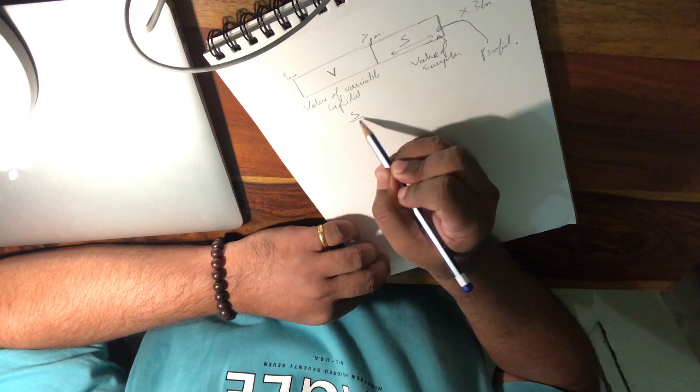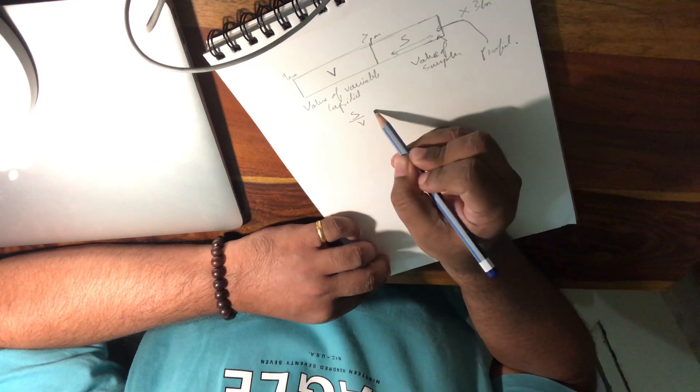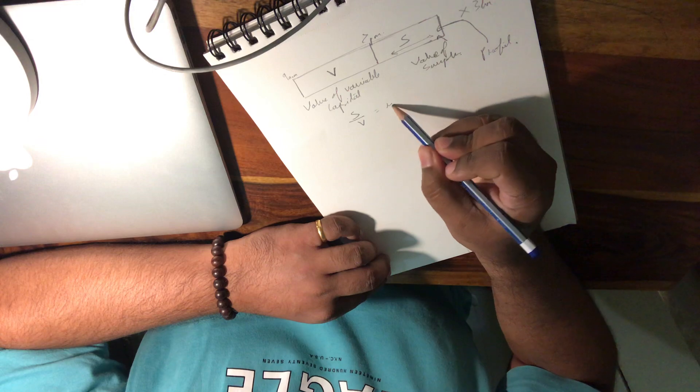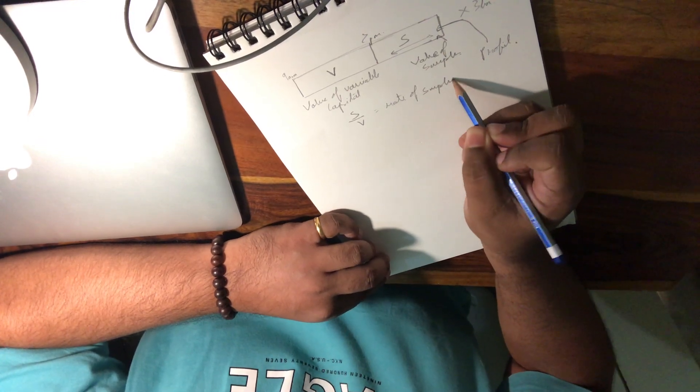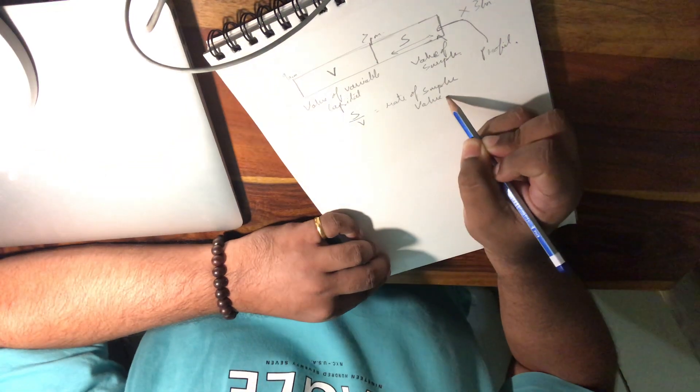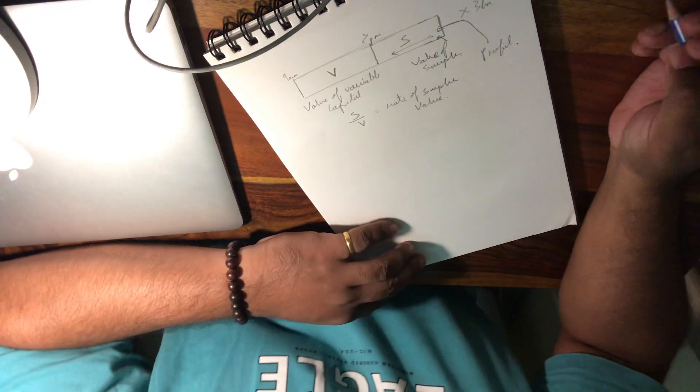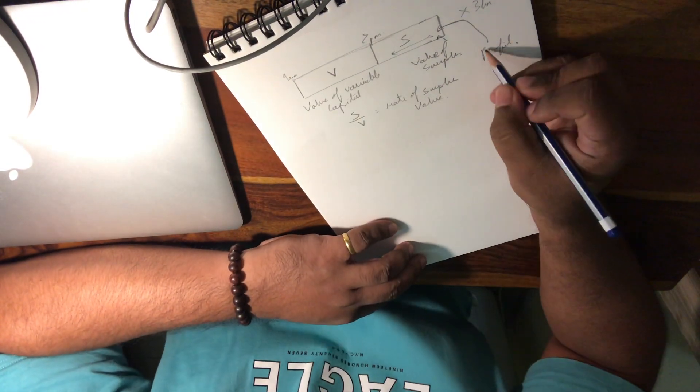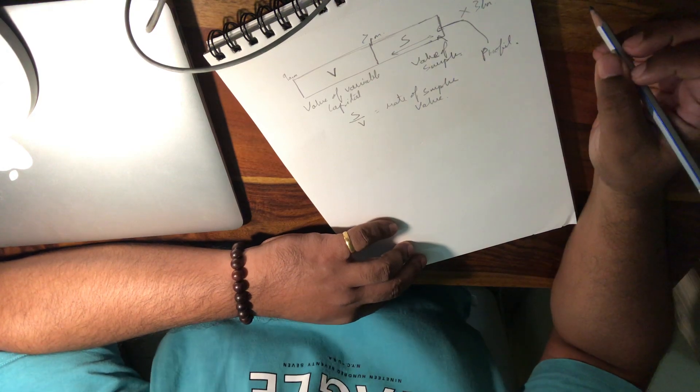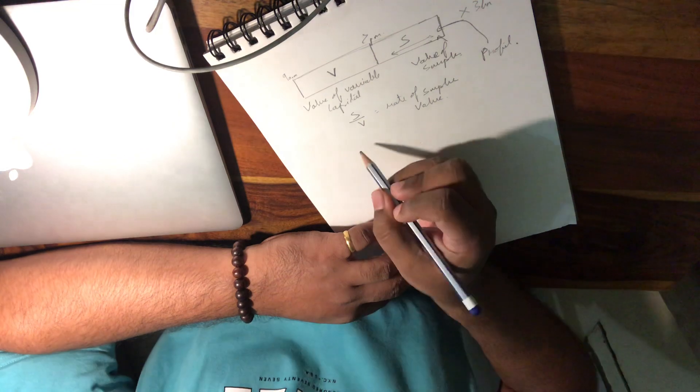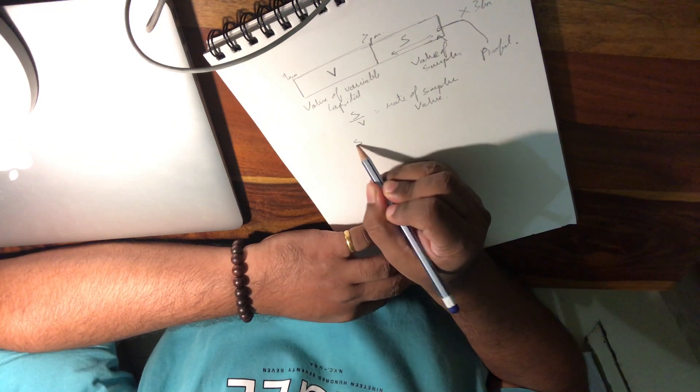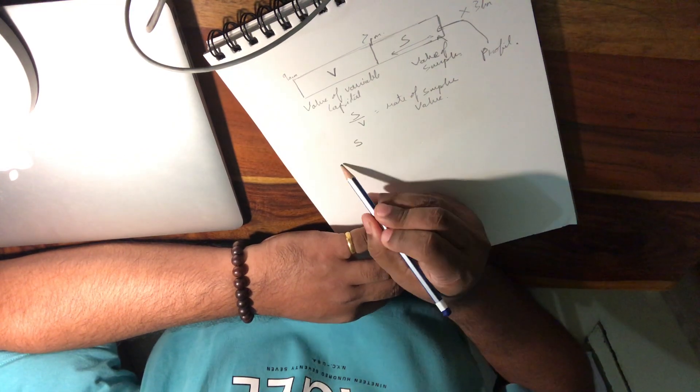Now according to Marx, S by V is essentially what he calls the rate of surplus value. But what we are more interested in is his issue with profit. And to derive the equation on the profit, it's very simple: it's essentially the surplus that you are creating divided by...